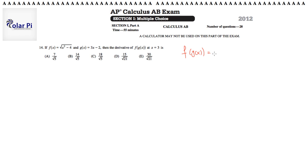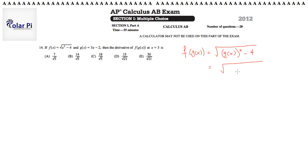Which would read: root — that's a better square root sign — root of g of x squared minus 4. And of course this is going to look like root of 3x minus 2, which is what g of x is, squared, minus 4.